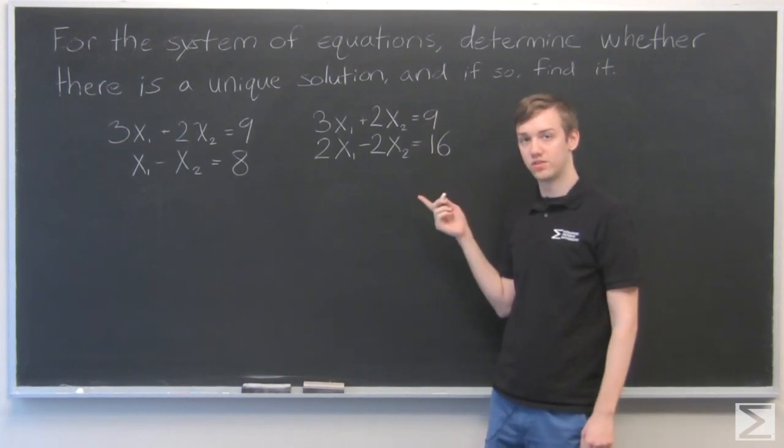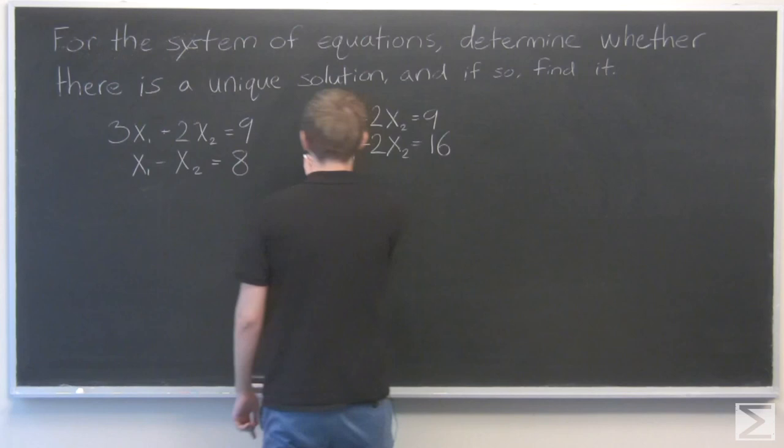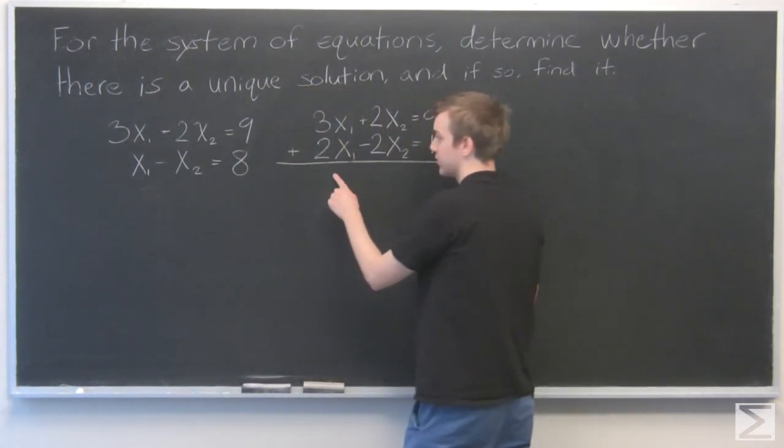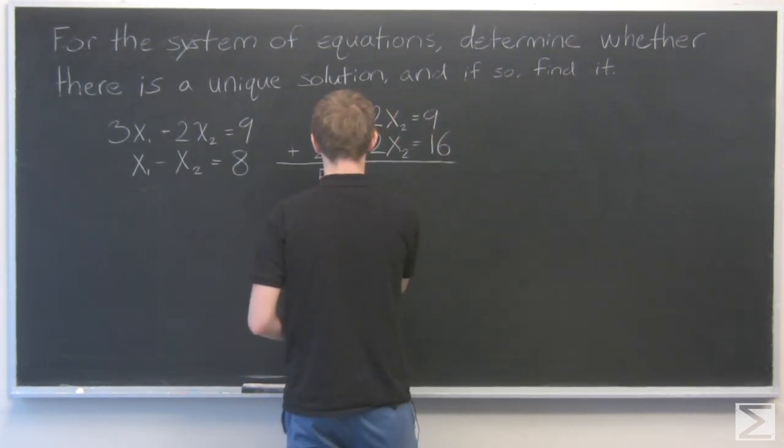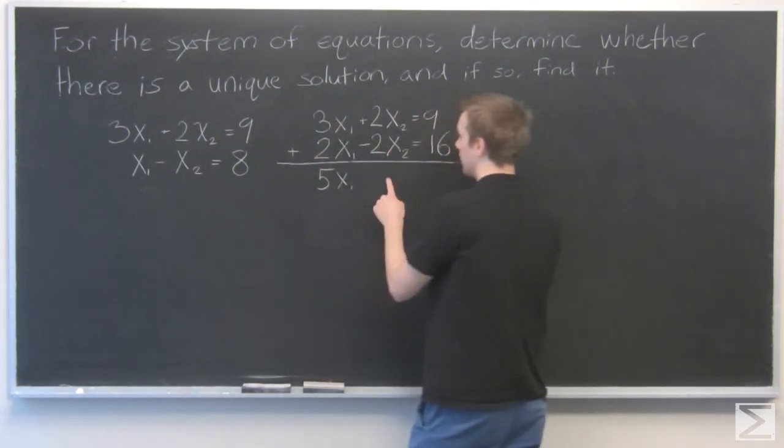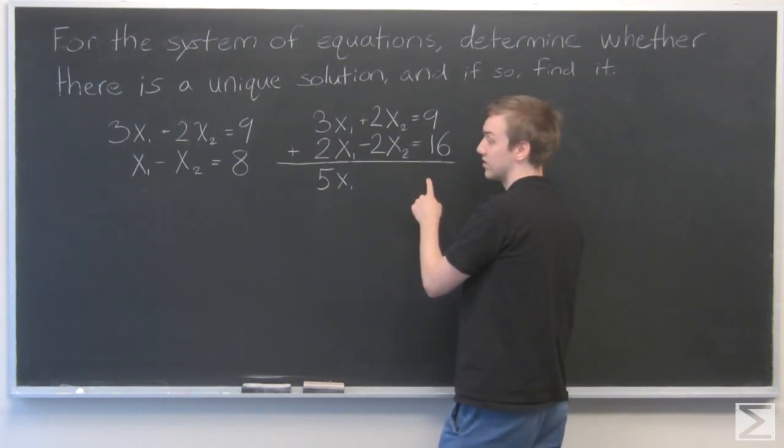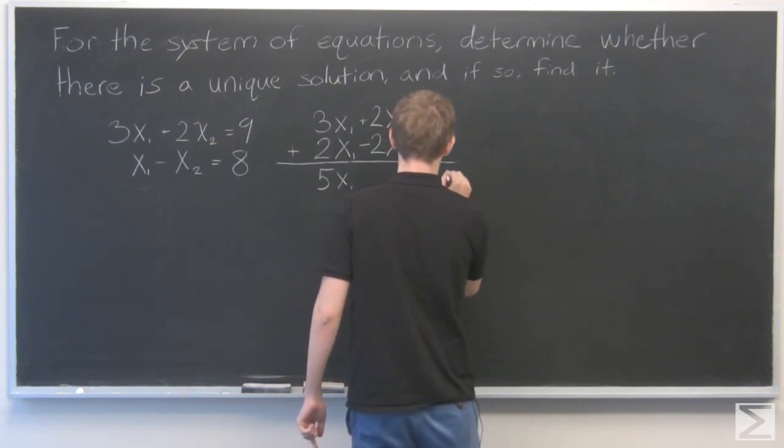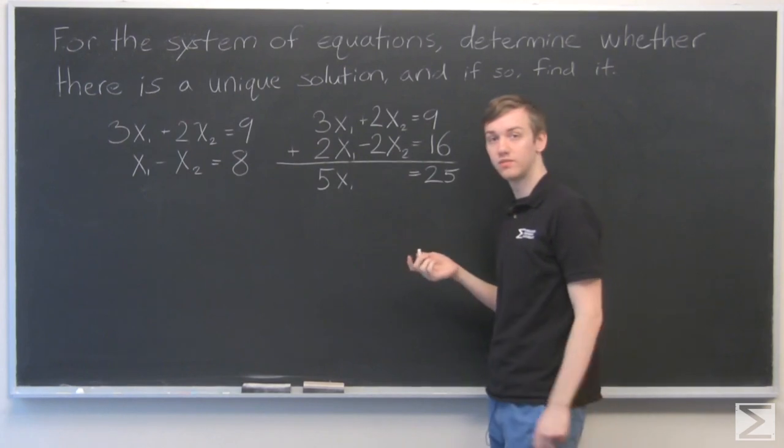Now I can add these two equations together, and we'll be able to solve for x1. So 3x1 plus 2x1 equals 5x1. 2x2 minus 2x2 is 0, and 9 plus 16 is 25. So now we have 5x1 equals 25 divided by 5, and we get x1 equals 5.